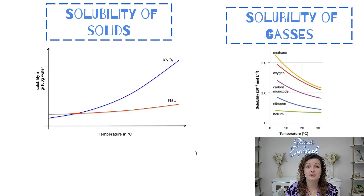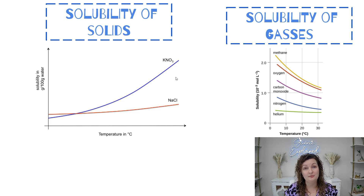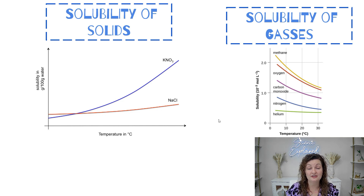If we look at this in graphical form — this graph is for solids but the trend is the same for liquids as well. On here, our x-axis is temperature and our y-axis is solubility. As we increase temperature, we are increasing our solubility for solids and liquids. Then over here is the same graph but with different lines — these are all gases, and you can see a negative slope trend, which means that as we increase temperature we decrease solubility.